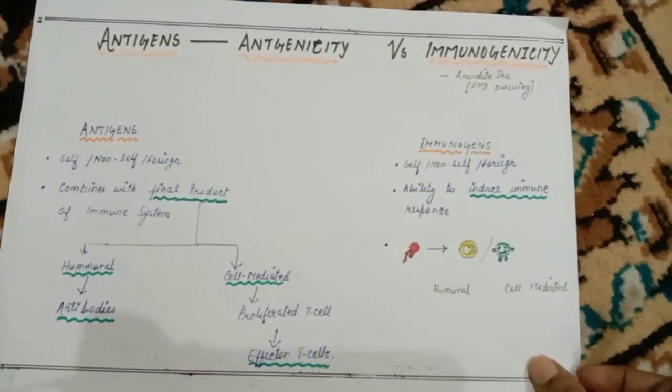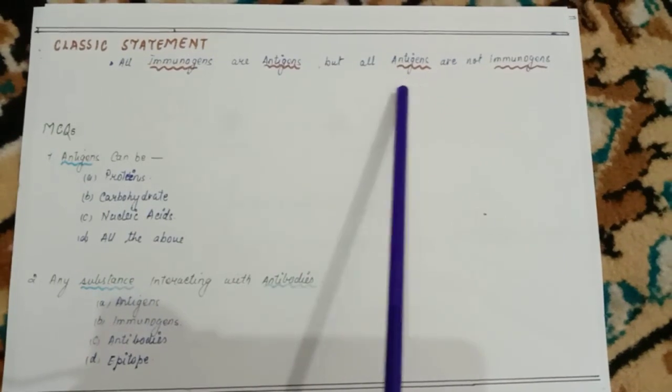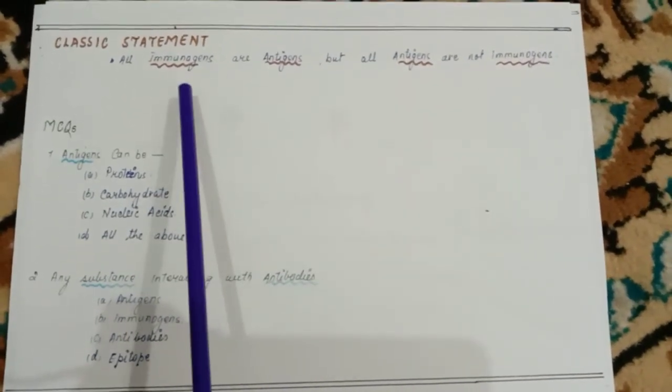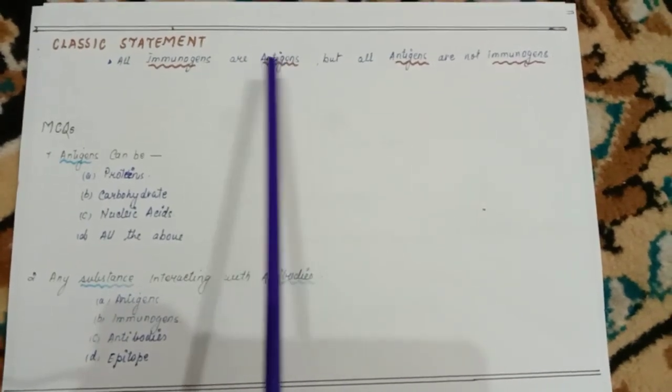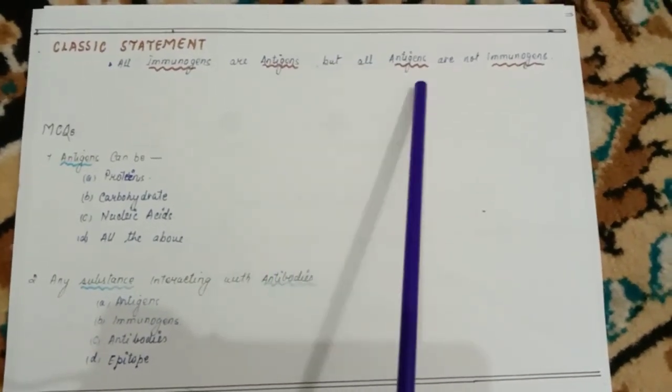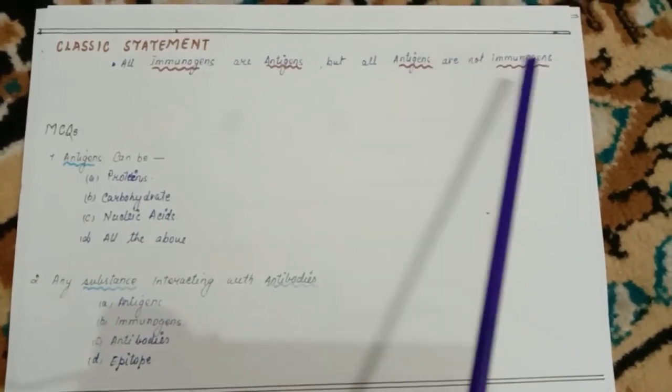There is a classic statement here: all immunogens are antigens, but all antigens are not immunogens. Immunogens are definitely foreign and they also react with the final product, but antigens that cannot initiate that kind of immune response — they are foreign but they can never be immunogens.